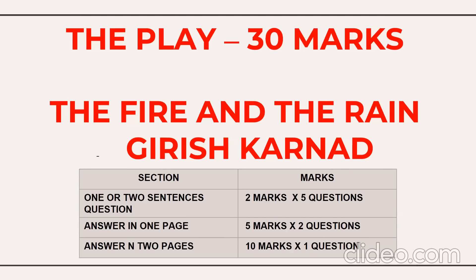This play has a weightage of 30 marks and will be divided into three sections. The first section has two-mark questions: out of seven questions, you attempt five, so two times five equals ten marks. The second section has five-mark questions: out of three questions, you attempt two. Then there is one question for ten marks. So altogether, that's 30 marks from the play.